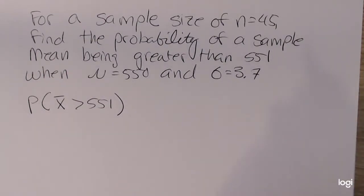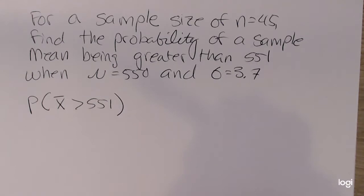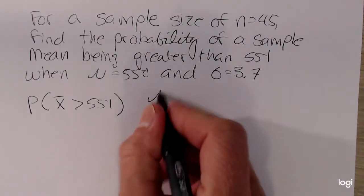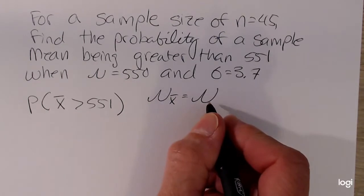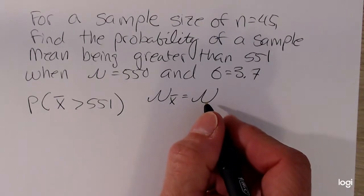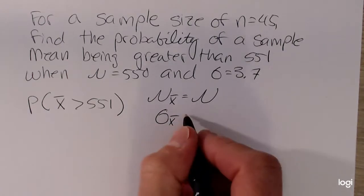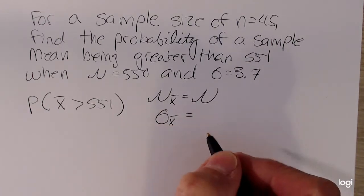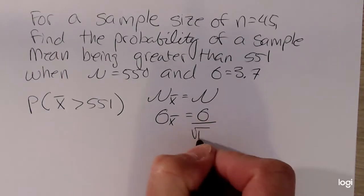The central limit theorem says for sample sizes of at least 30, x bar is going to be normally distributed, meaning it will be bell-shaped, with a mean the same as the original population of individual values, but the standard deviation is always going to be smaller. Specifically, it will be smaller by the original standard deviation divided by the square root of n.